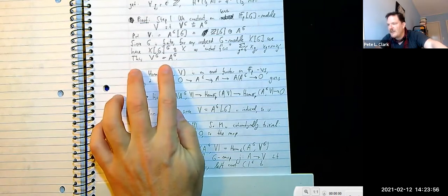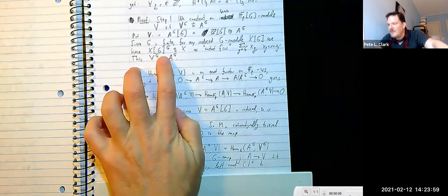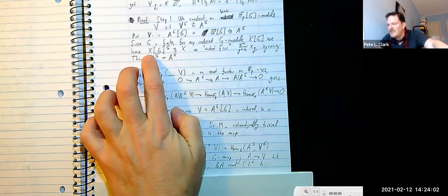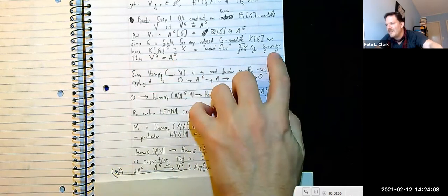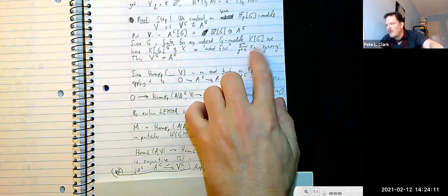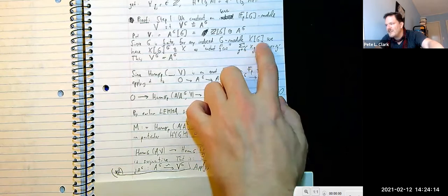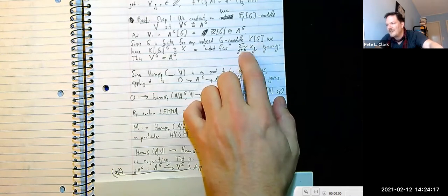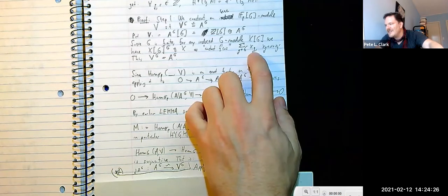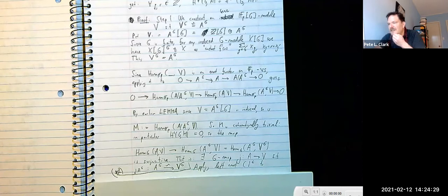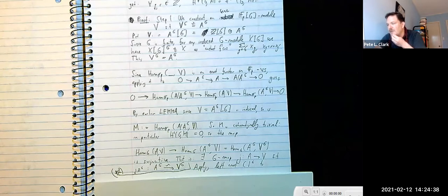As reviewed last time — generalizing a homework exercise — if you take any induced module over a finite group, Z[G] ⊗ X, the G-invariants are canonically isomorphic to X viewed as the constant functions: formal finite sums over elements of X where x(g) is the same for all g in G.